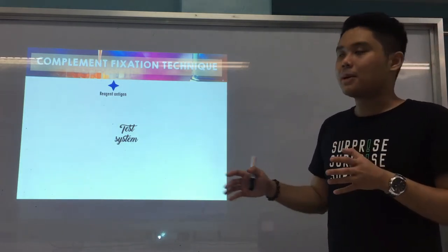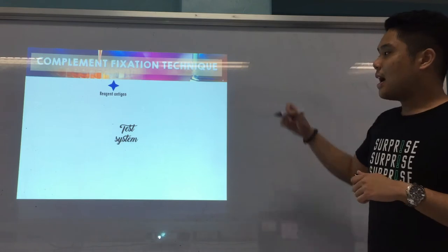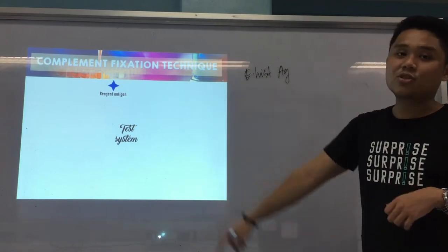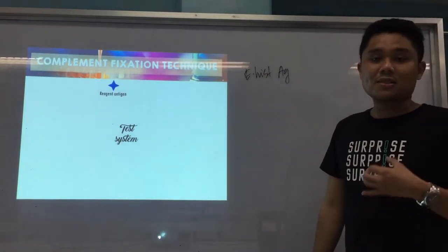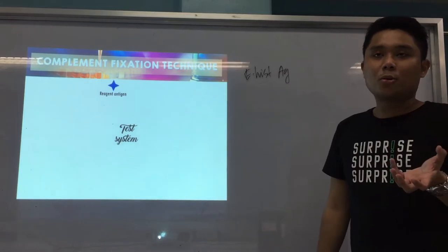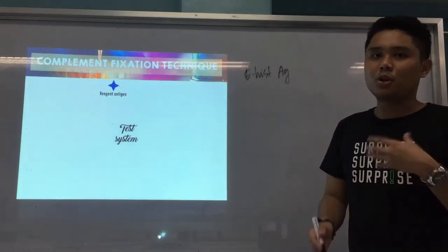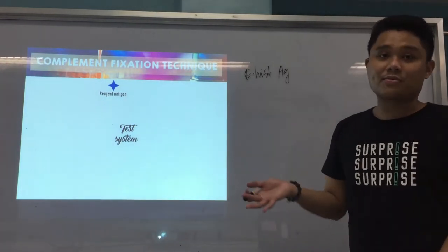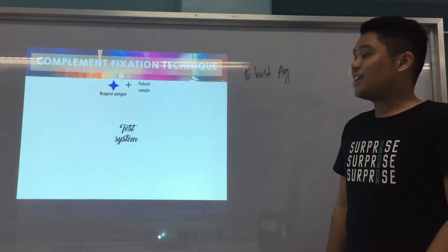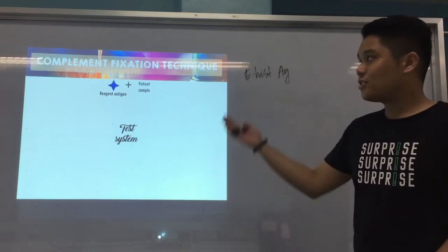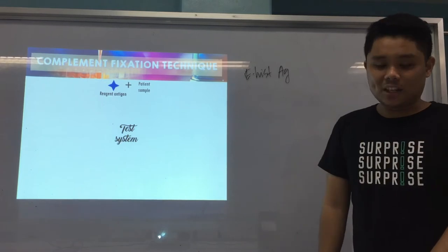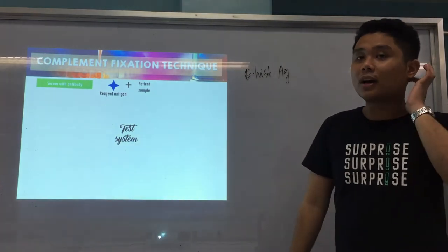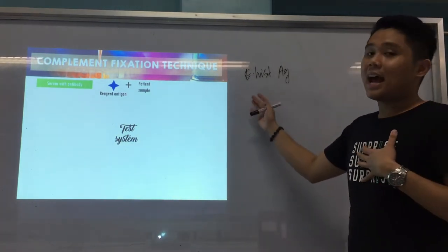In your test system, you have a reagent antigen — for example, Entamoeba histolytica antigen. The reagent antigen is manufactured; you get it from a commercial producer. You add your patient sample. If you're detecting antibodies to Entamoeba histolytica antigen, and the patient sample has the antibody, it will bind with your reagent antigen, forming an antigen-antibody complex.